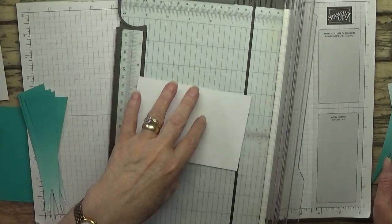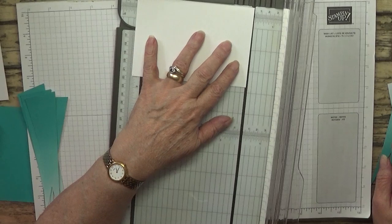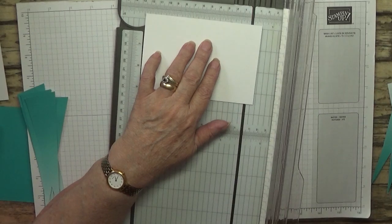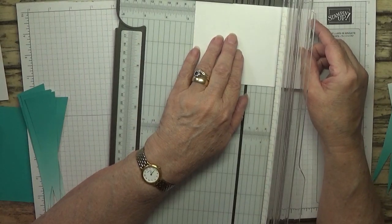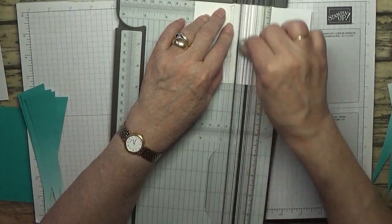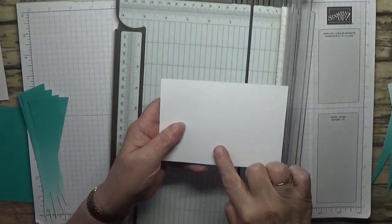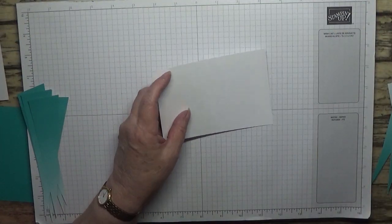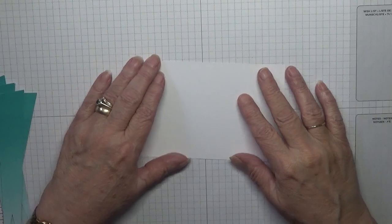Now with your white card, you need to find the middle. So this measures five and three eighths. That's two and a half, two and five eighths and one sixteenth. Two and five eighths, which is there, and we want one sixteenth. And we're just going to score it because you're not going to see it, just so we've got the middle.